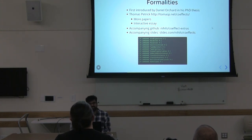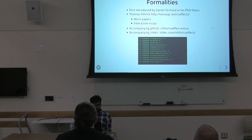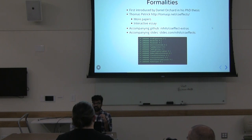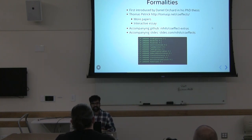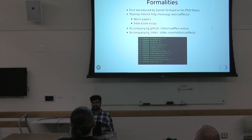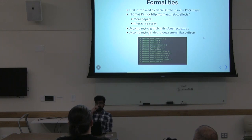Before I get deeper into what a co-effect is, I'd like to talk about some of the formalities. Most of the work on co-effects was done by grad students and a professor — Thomas Petricek and Danny Orchard, based at Kent and Cambridge. They developed a co-effect calculus and a categorical semantics for that calculus. I tried to implement it in Haskell and see how far it could get — there are some limitations to Haskell's type system where not all their paper's examples can be expressed. The accompanying GitHub is at github/neos co-effect-extras and slides are at the URL shown.